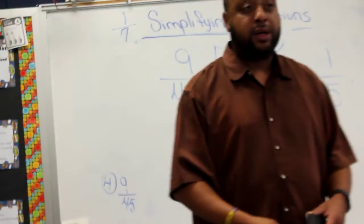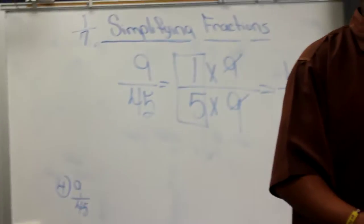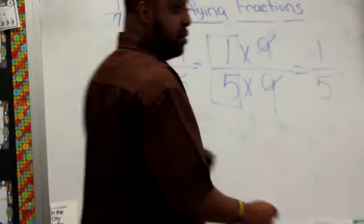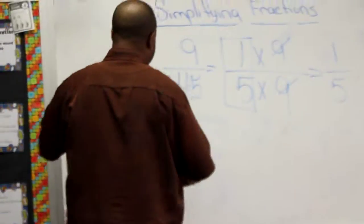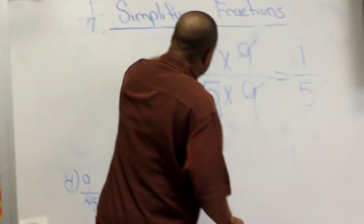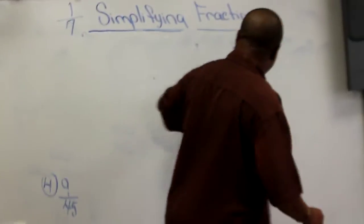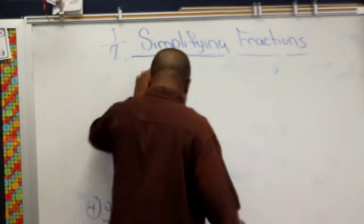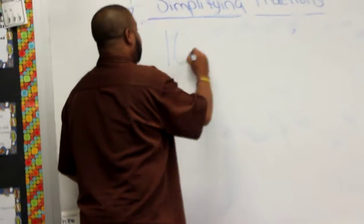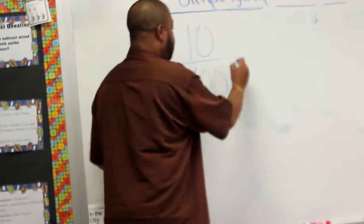Now we're going to work some problems. The first thing I want you all to do is write 10 over 100. Do you think it works with big numbers? Yes sir. 10 over 100 — 1 times 10.